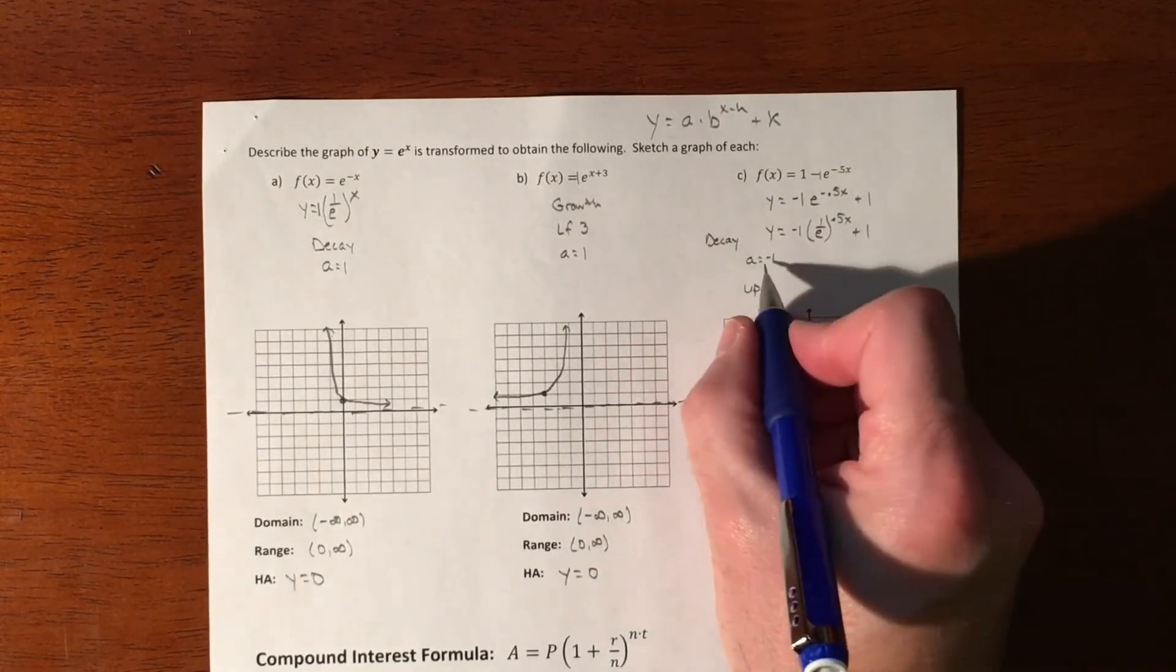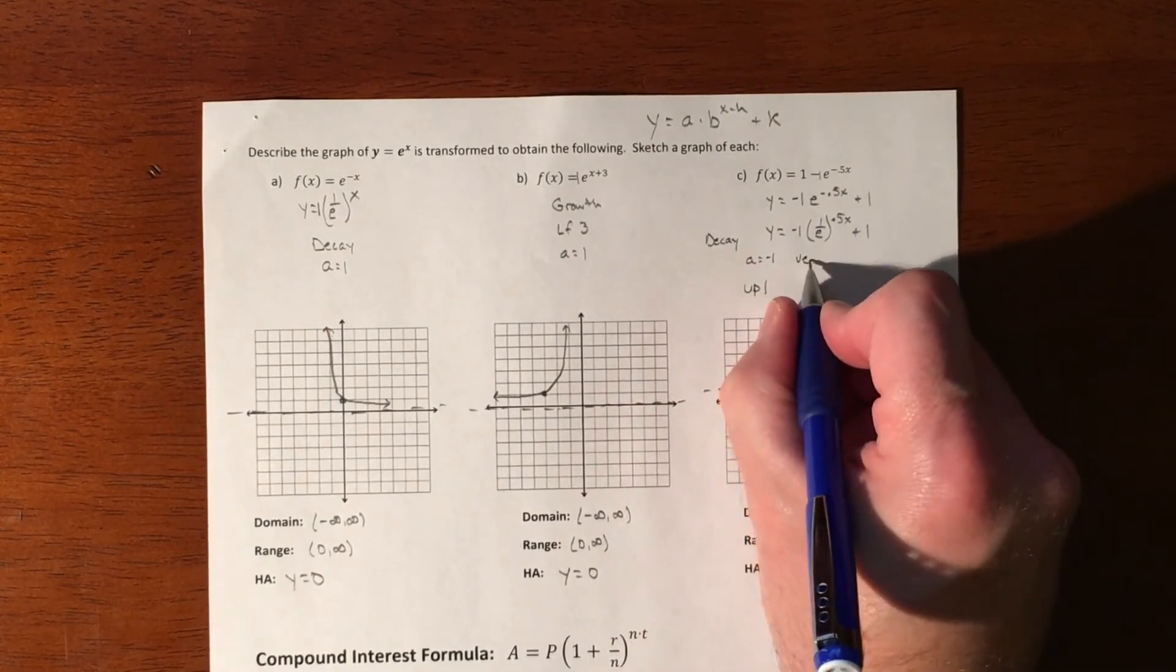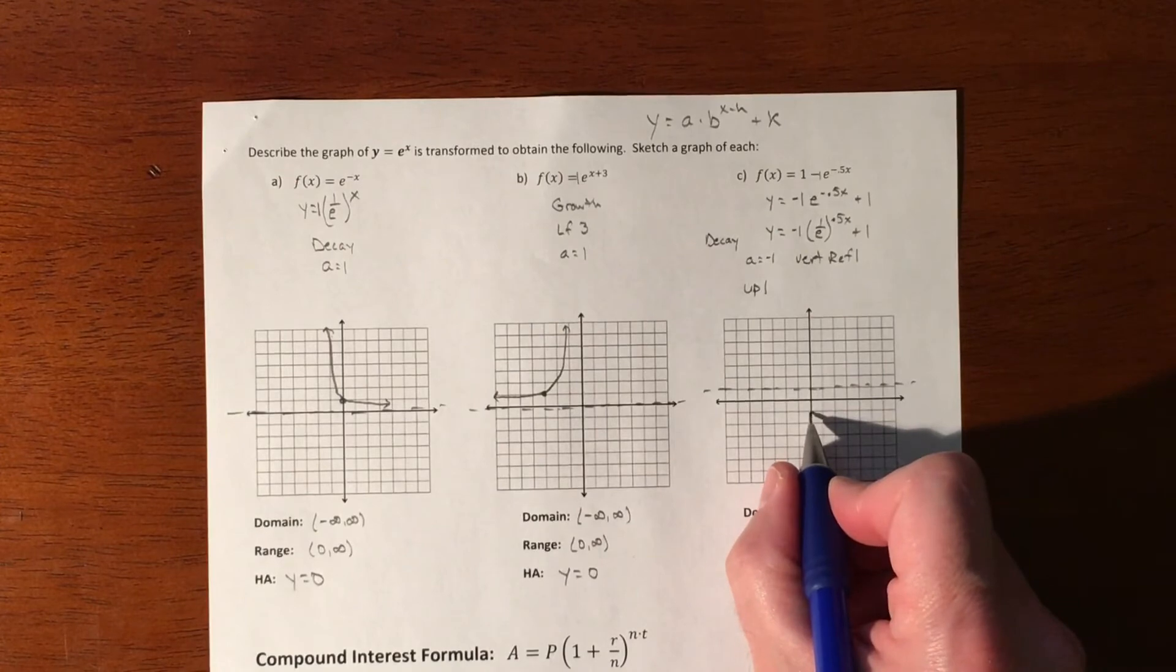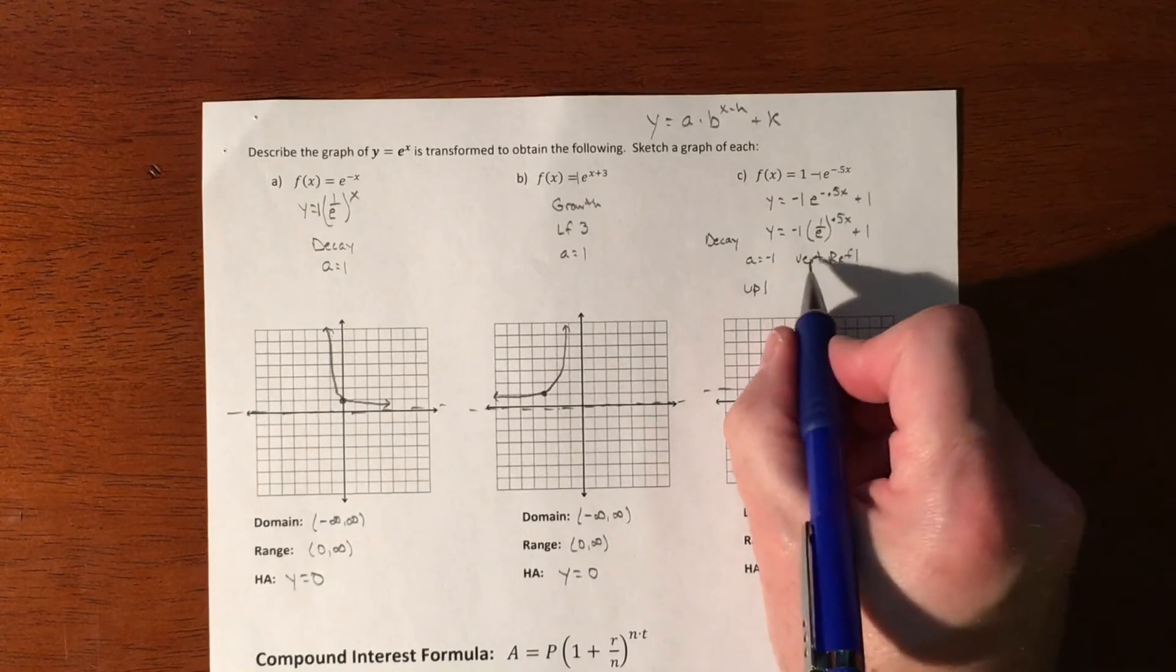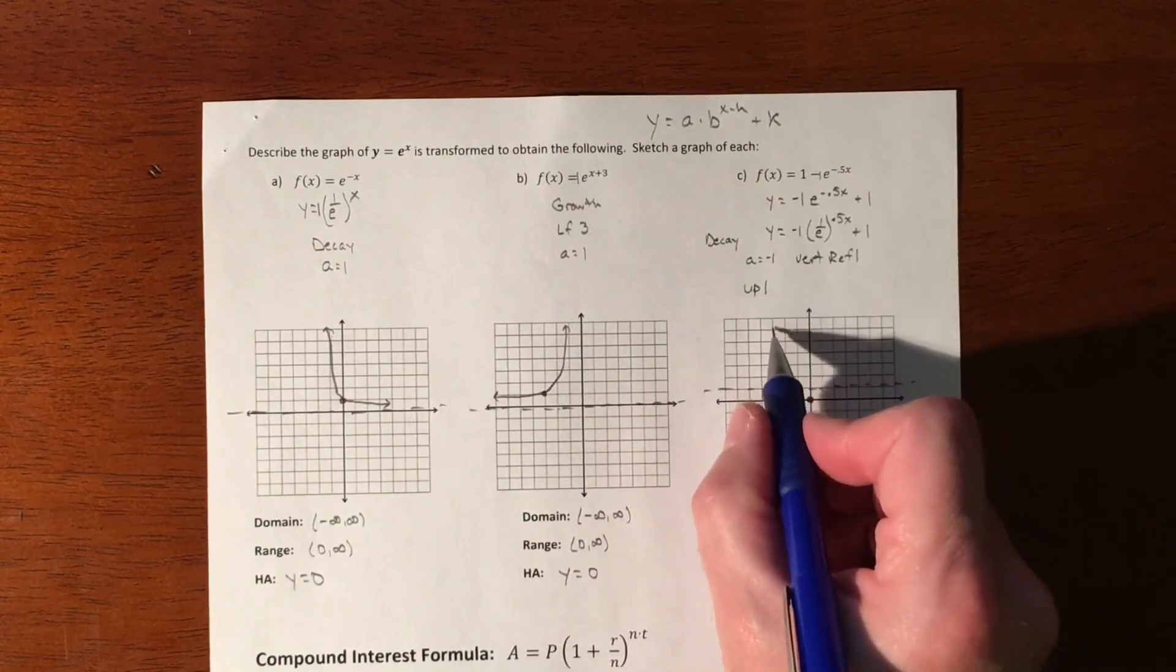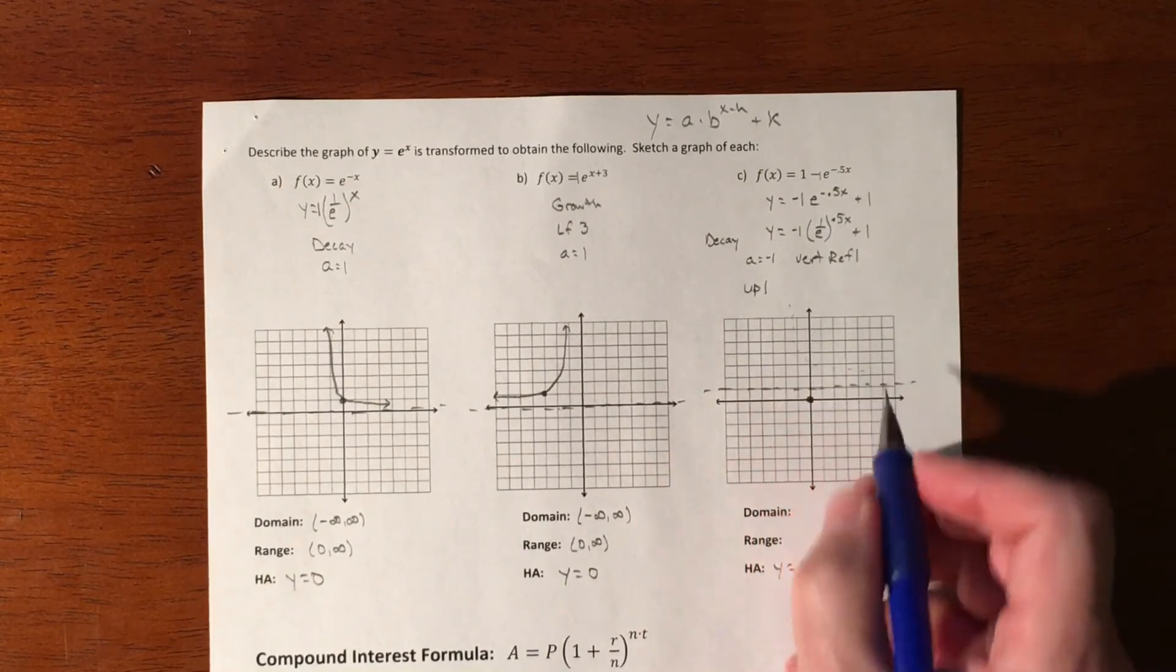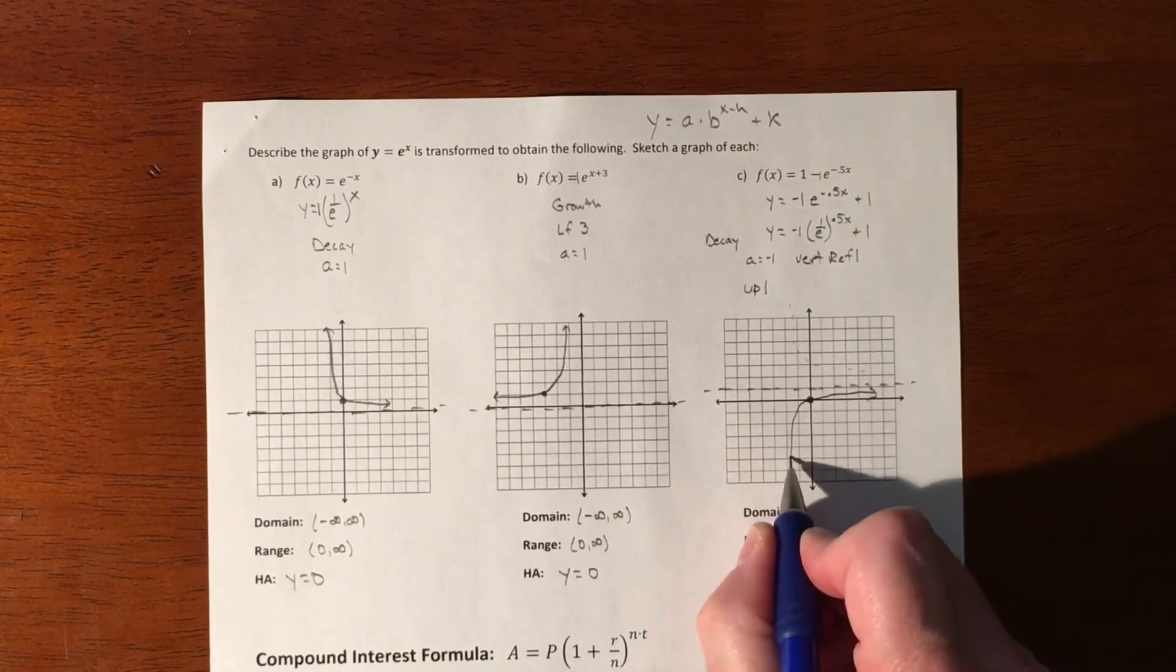And then we have decay. We're starting at negative 1. We also have a vertical reflection going on. So we're starting at negative 1. And it goes up 1 to here. But then we have a vertical reflection going on to it. So it should be a decay that's doing this. But we're going to vertically reflect it. So we would have had kind of that look to it. So instead, we have that look to it.